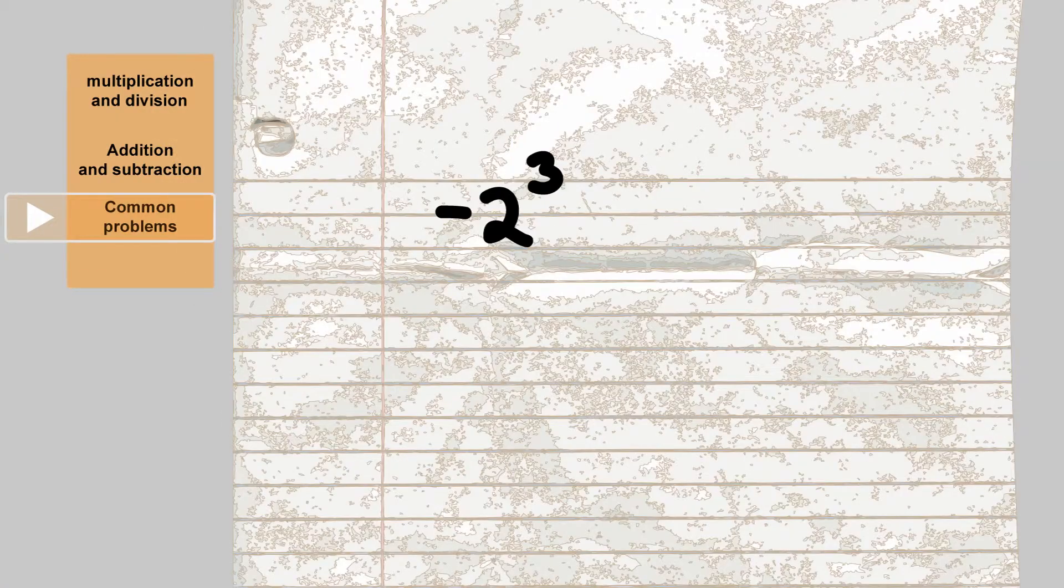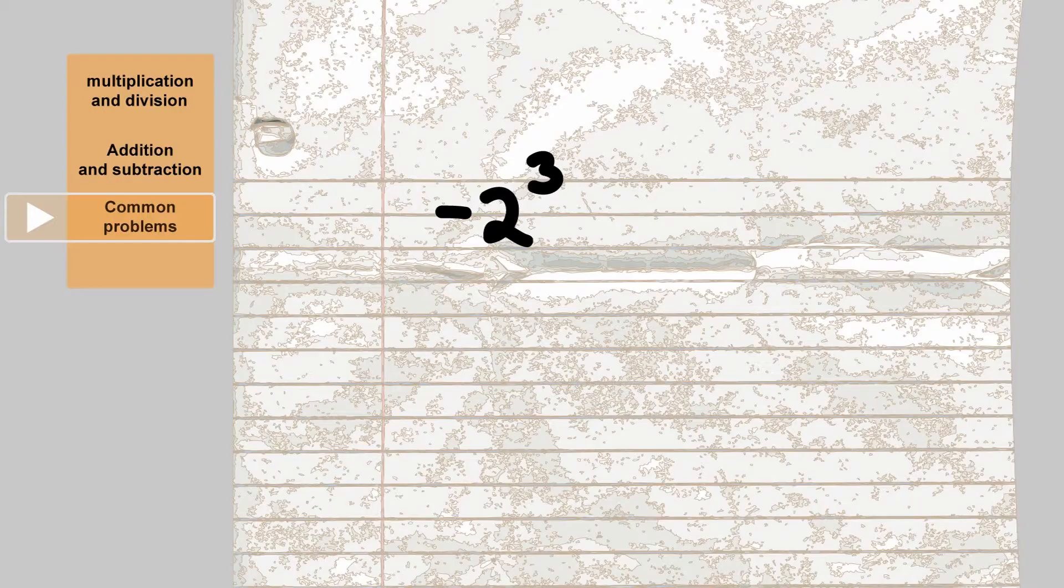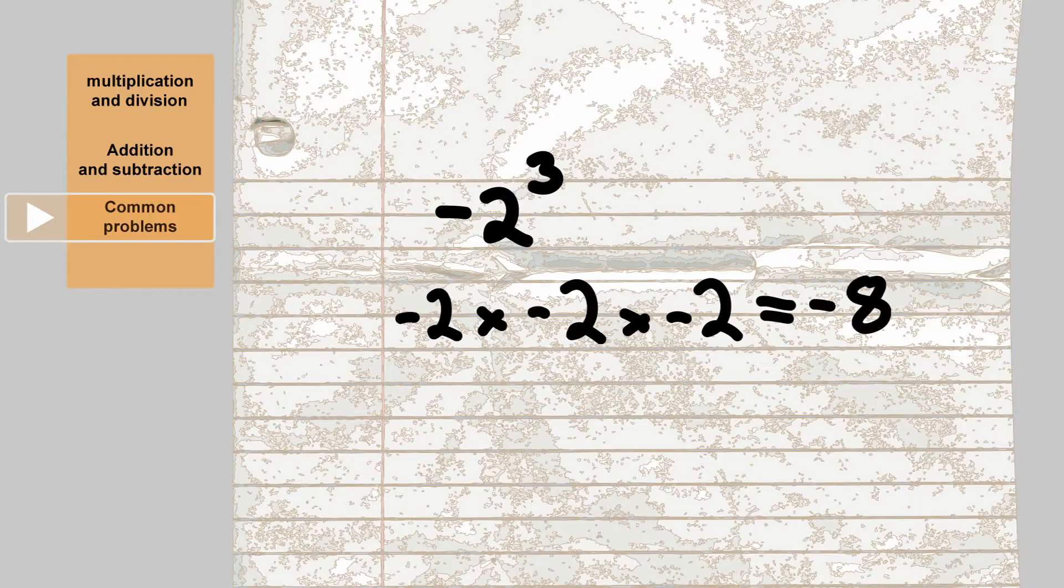Something I've found trips people up is when they need to multiply more than two numbers. Take negative 2 cubed. This is equal to minus 2 times by minus 2 times by minus 2, for an answer of minus 8.